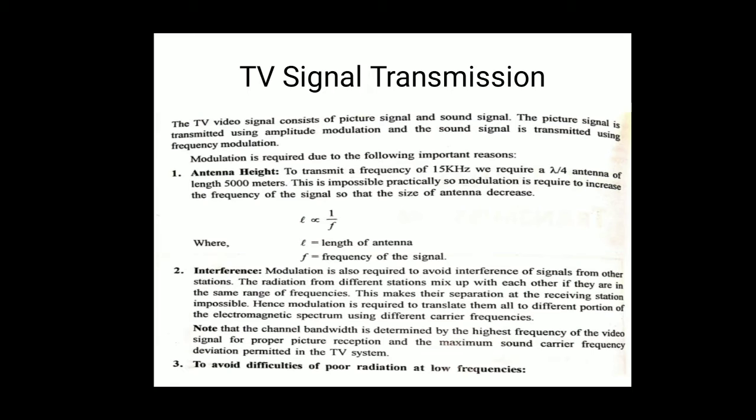Note that the channel bandwidth is determined by the highest frequency of the video signal for proper picture reception, and the maximum sound carrier frequency deviation permitted in the TV system. The third thing is to avoid difficulty of poor radiation at low frequency. Basically, at low frequency the radiation quality is poor, so by increasing the frequency, the radiation quality is improved.